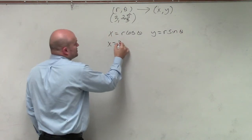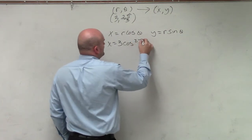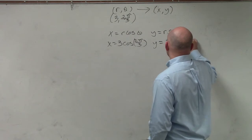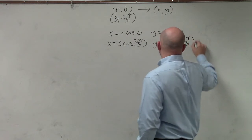So x equals 3 cosine of 2 pi over 3. y equals 3 times sine of 2 pi over 3.